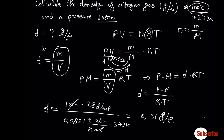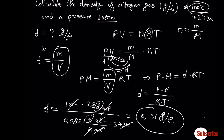The units simplify nicely: atmosphere cancels with atmosphere, mole with mole, and Kelvin with Kelvin — leaving only grams per liter. This is the density of nitrogen gas under those conditions.